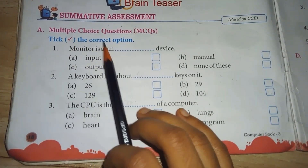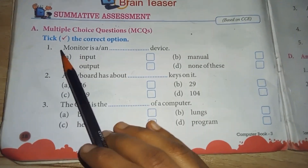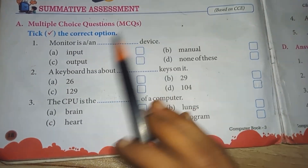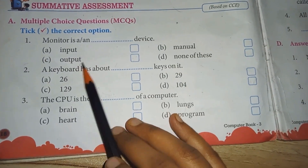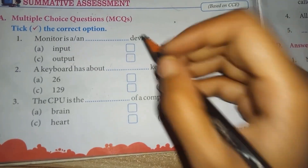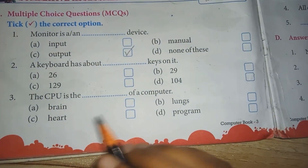First, tick the correct option. We have to tick these four. First: monitor is a blank device — input, output, mutual, or none of these. Which one will it be? Output. Monitor is an output device.